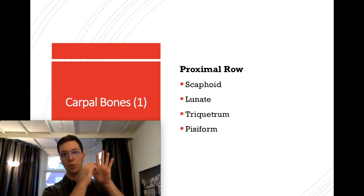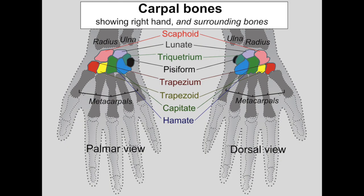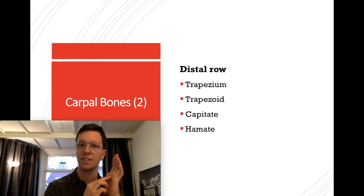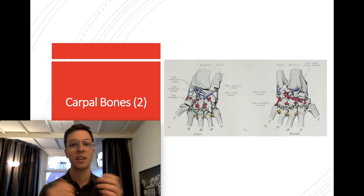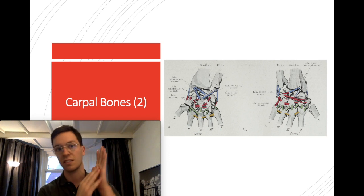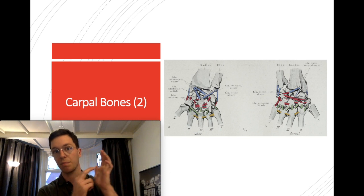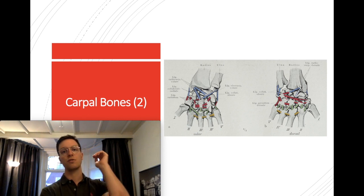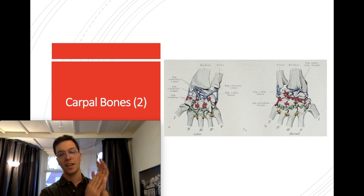There is a proximal row and a distal row. In the proximal row you have the scaphoid, the lunate, the triquetrum, and the pisiform bones. In the distal row you have the trapezium, trapezoid, capitate, and the hamate. Those bones are connected with individual ligaments, but it goes into too much detail to discuss here. What you need to know is that they are kept in place by those ligaments and that certain muscles of your forearm attach at those carpal bones.